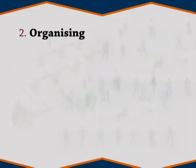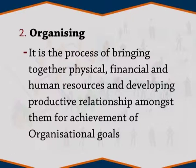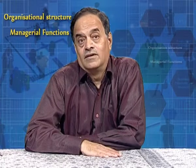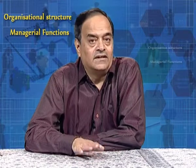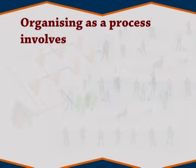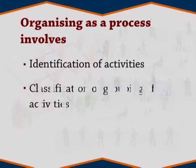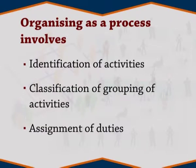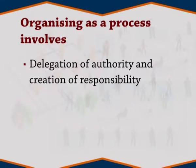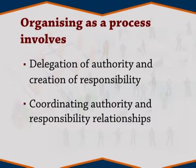The second function is organizing. It is the process of bringing together physical, financial, and human resources and developing productive relationships amongst them for achievement of organizational goals. According to Henry Fayol, to organize a business is to provide it with everything useful for its functioning — that is raw material, tools, capital, and personnel. To organize a business involves determining and providing human and non-human resources to the organizational structure. Organizing as a process involves: identification of activities, classification and grouping of activities, assignment of duties, delegation of authority and creation of responsibility, and coordinating authority and responsibility relationships.